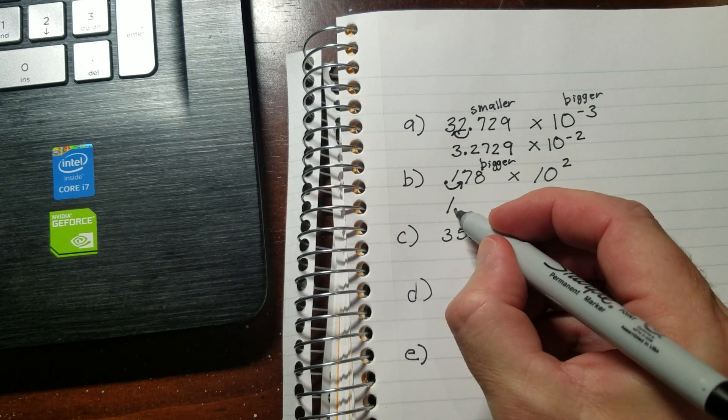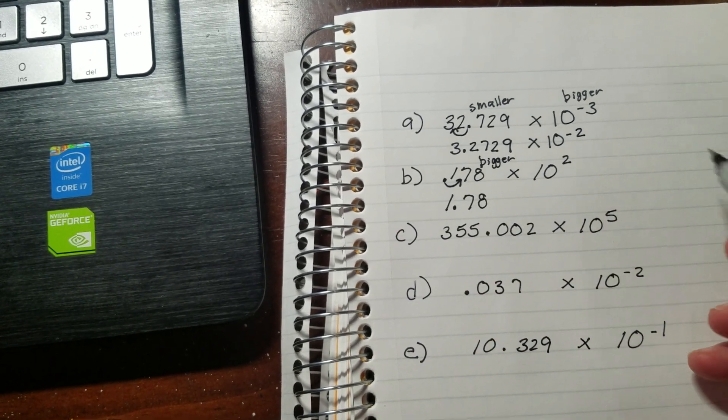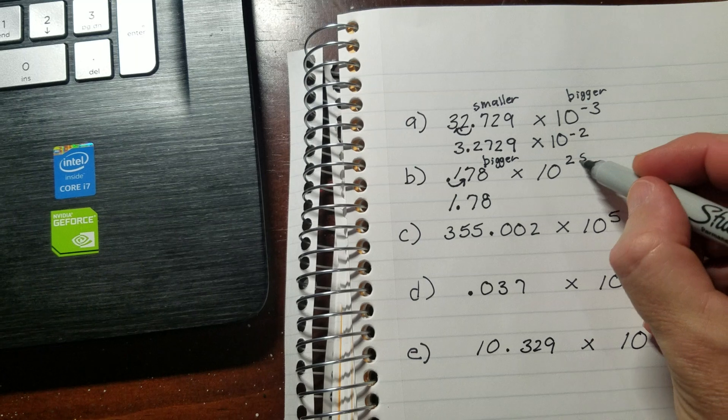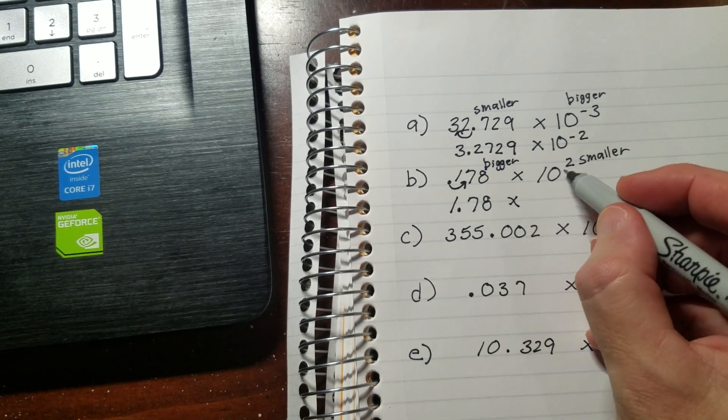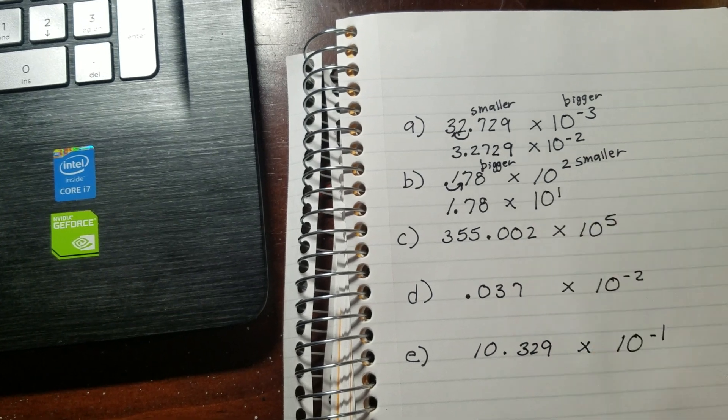So I'm going to write 1.78, which means that this one over here is going to actually have to become 1 smaller. So to make it 1 smaller, I go from 2 to 1. Alright.